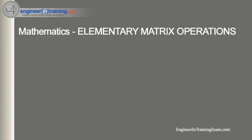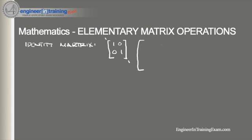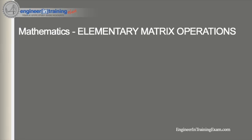Before we start, it's important to define what an identity matrix is. An identity matrix is an n by n square matrix with ones in the diagonals and zeros elsewhere. For example, a 2x2 identity matrix has one in the diagonal and zero elsewhere. A 3x3 identity matrix similarly has ones in the diagonals and zeros elsewhere. Each type of elementary operation may be performed using matrix multiplication with square matrices called elementary operators.